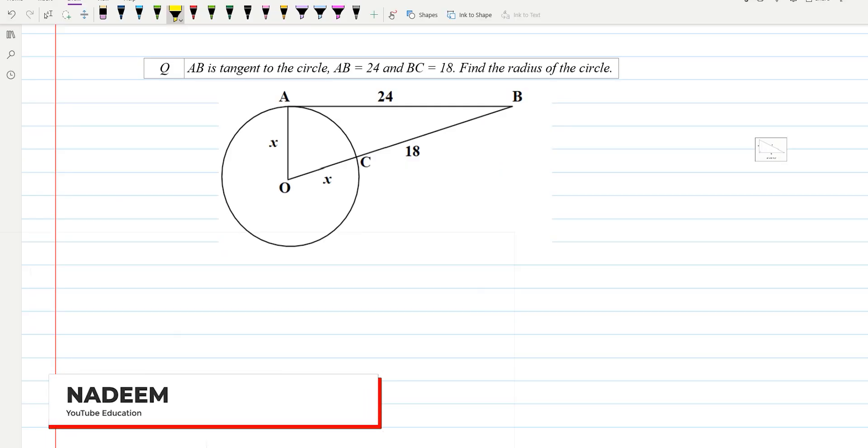Hello everyone, today we'll be going through a very interesting question related to trigonometry. AB is tangent to the circle, touching the circle at one point. This is the tangent line, AB is tangent to the circle.